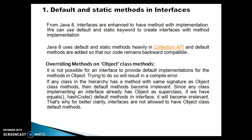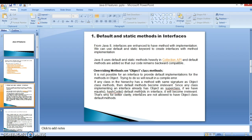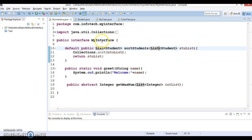When you define a default or static method in an interface in Java 8, there are some things you need to keep in mind. Overriding Object class methods is not possible — it is not possible for an interface to provide a default implementation for methods in Object. Trying to do so will result in a compilation error. If any class in the hierarchy has a method with the same signature as Object class methods, the default method becomes irrelevant, since any class implementing an interface already has Object as its superclass. If we have equals or hashCode as default methods in an interface, they become irrelevant. That's why, for better clarity, interfaces are not allowed to have Object default methods.